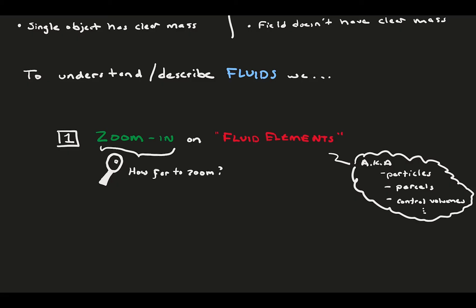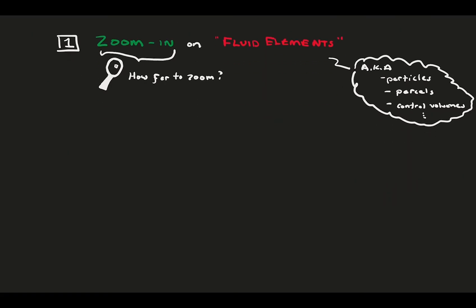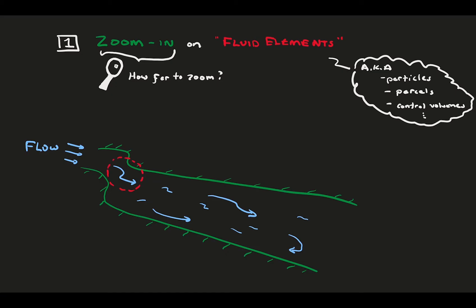But, we have the question of how far do we really need to zoom in? Consider our stream again, with flow nicely following the conduit curvature. Let's try and define a fluid element near one of the corners over a drawn flow pathline.